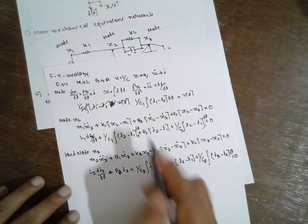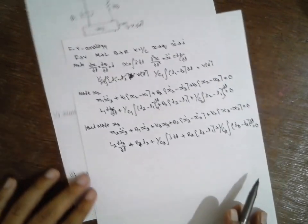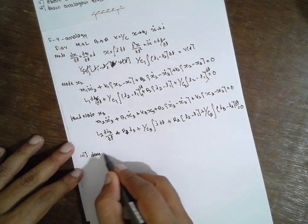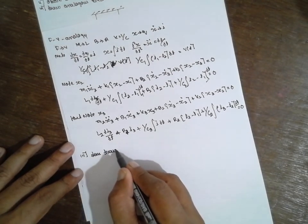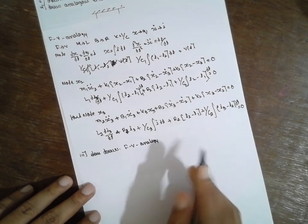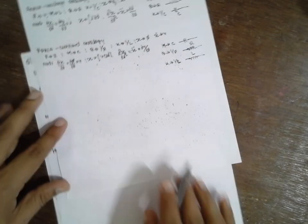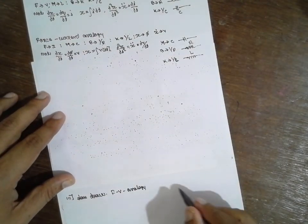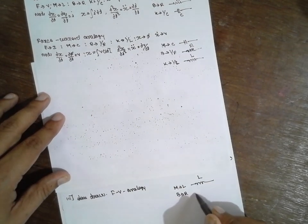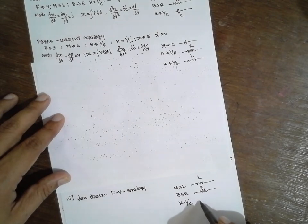You have to write dt because it is written dt here. This completes the equations. Next you have to draw the electrical network of the force-voltage analogy. M is replaced with inductance, B is replaced with resistance, and K is replaced with 1/capacitance in the diagram.